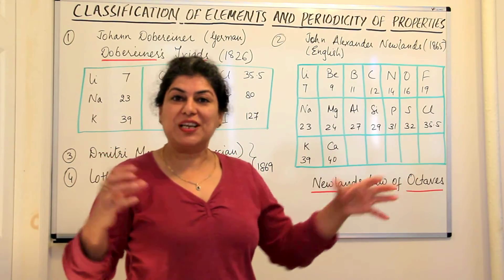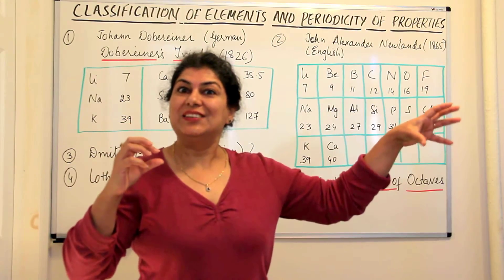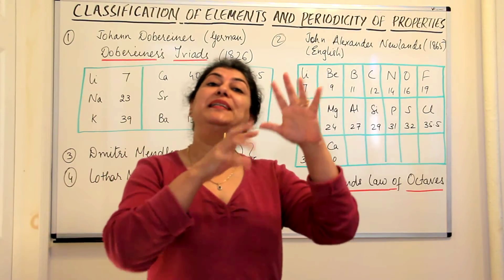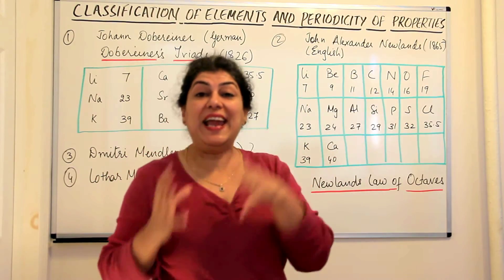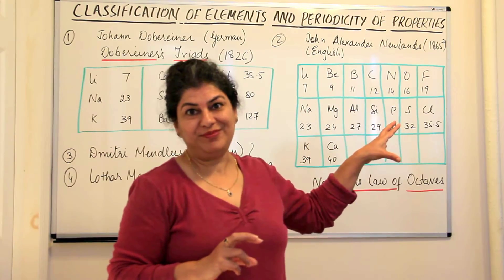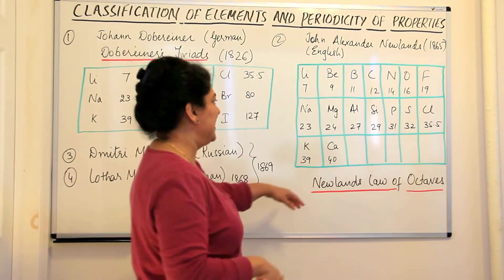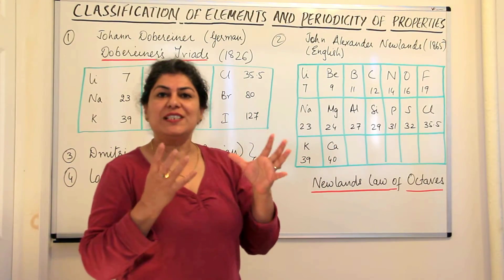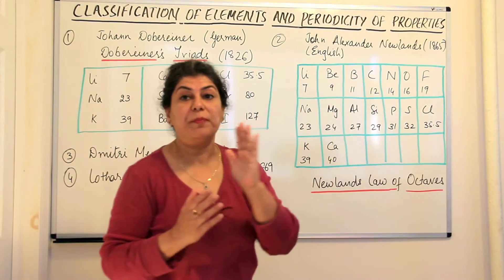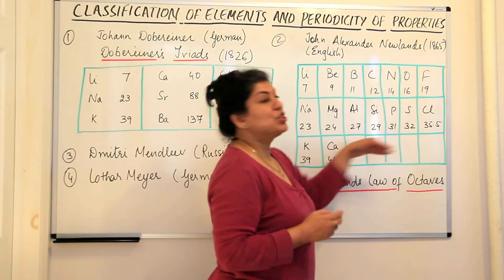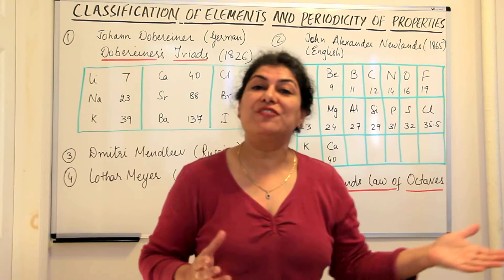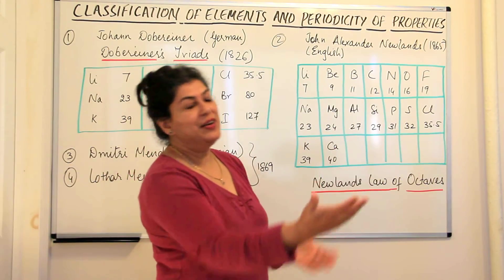The eight notes of music are do, re, mi, fa, sol, la, ti, do — or in Hindi it is sa re ga ma pa dha ni, and sa comes back. The eighth note is a repetition of the first note. These are the octaves of music. Newlands said that just like the octaves, if you arrange elements according to their increasing atomic masses, you find the eighth element will have properties similar to the first one. Elements also have that kind of relationship.